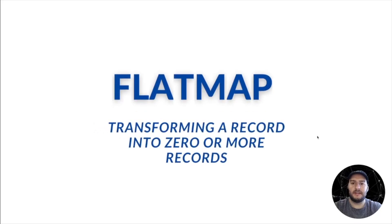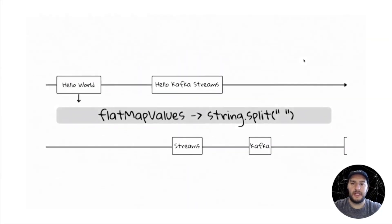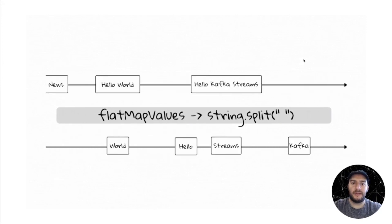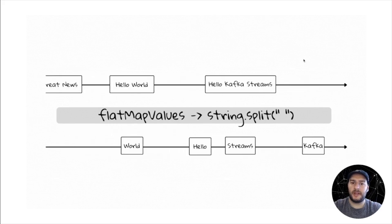A similar operation to map is flat map. This allows us to transform a record into zero or more records. But you might be more familiar with the version that we use in our first tutorial, which is called flat map values. This also allows us to transform a record into multiple records, but it also doesn't change the key, avoiding repartition. And this is how it looks like. In our first tutorial, we use the flat map values operation to split the sentence into multiple words so that we can count every appearance of that word in our stream.